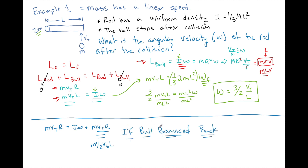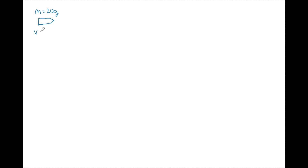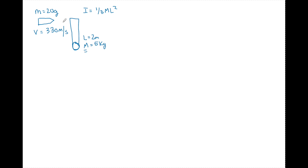Let's look at one more example with actual numbers. We have a bullet with mass equal to 20 grams and linear speed equal to 330 meters per second. It is going to embed inside a rod. The rod has uniform density and is initially at rest. The moment of inertia of the rod is (1/3)ML², it has a length L equal to 2 meters and mass capital M equal to 5 kilograms. I want to know the final angular speed of the rod-and-bullet system after the bullet embeds inside the rod — similar to a perfectly inelastic collision. Since there are no outside torques, angular momentum is conserved.